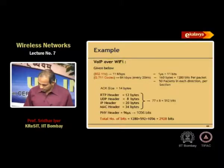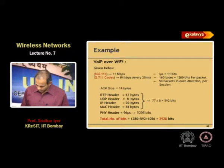In 1 second, how many such packets are going to be generated? 50 packets in each direction. There are going to be 50 packets going from the client to the other end and 50 packets coming in the reverse direction as well. This is the total number of packets that have to be fitted in 1 second of the 11 Mbps channel.